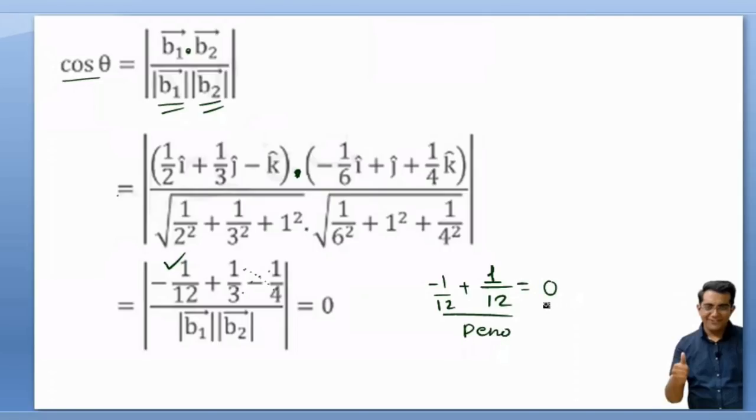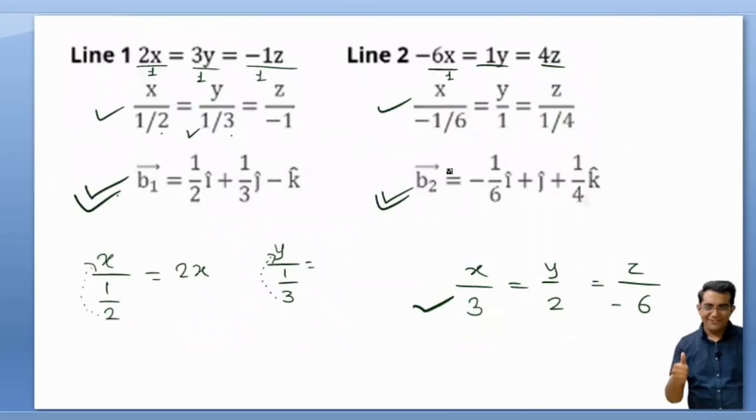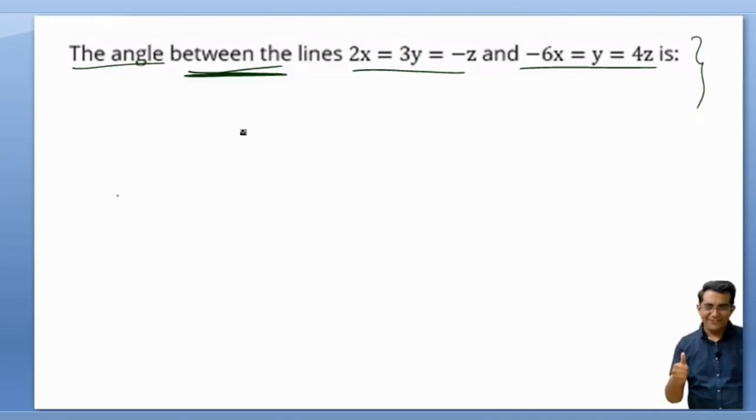So the numerator is 0. Numerator is 0, so 0 divided by denominator it would be 0. Do you know cos θ is 0 when θ is equal to what? 90 degrees. So my answer for this question is the angle between two lines is θ = 90 degrees. This is my final answer.